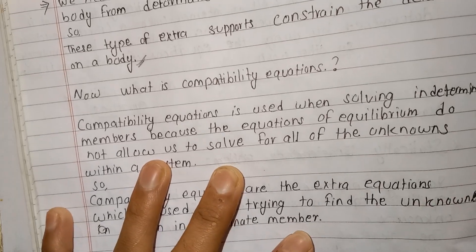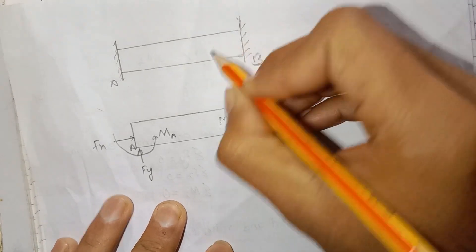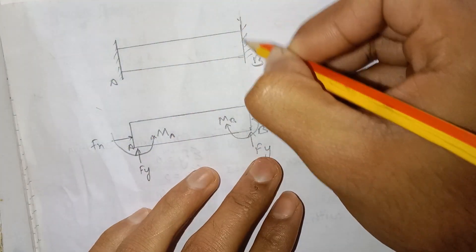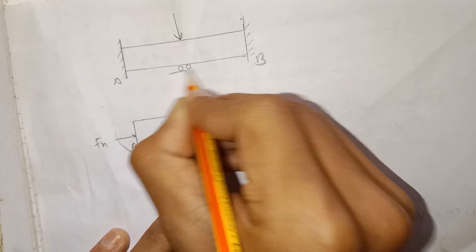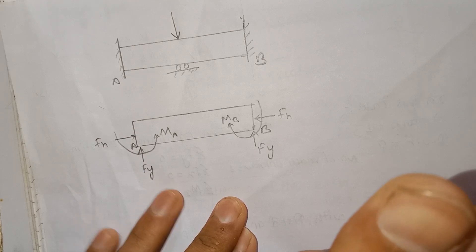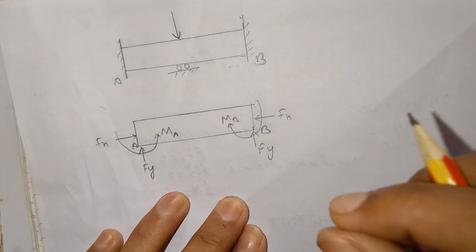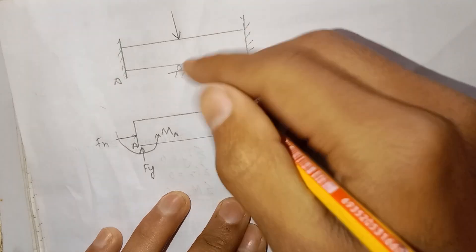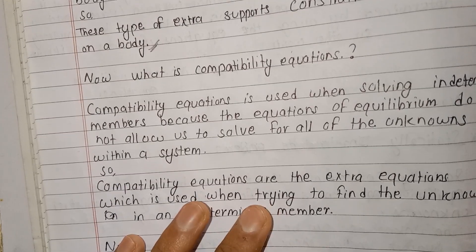An extra support constrains the deformation of a body. For example, a fixed support can generate reactions and moments. With an extra support like a roller support added to a fixed-support beam, the body becomes statically indeterminate. In that case, we need to use compatibility equations to solve the problem.